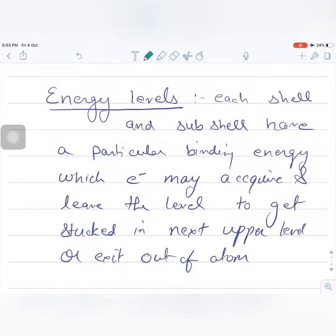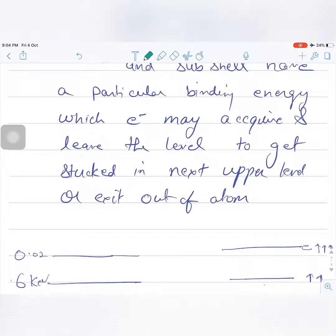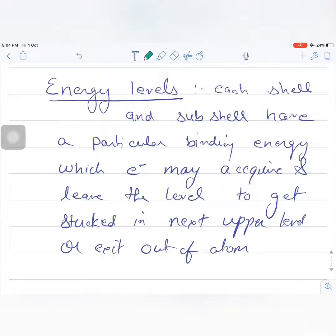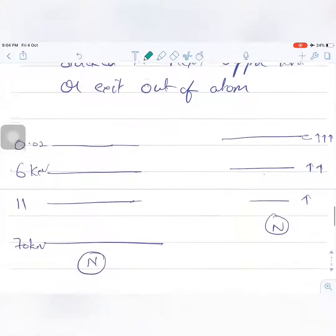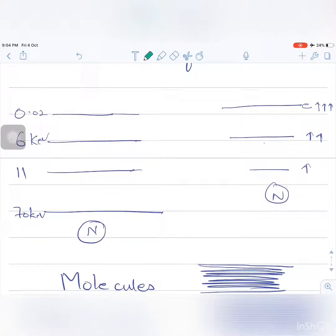This binding energy is the energy by which that electron is bound in that particular shell. Each shell and sub-shell has a particular binding energy which an electron may acquire and leave the shell to get to the next upper level or exit out of the atom. These energy levels are the levels of energy of the electrons.